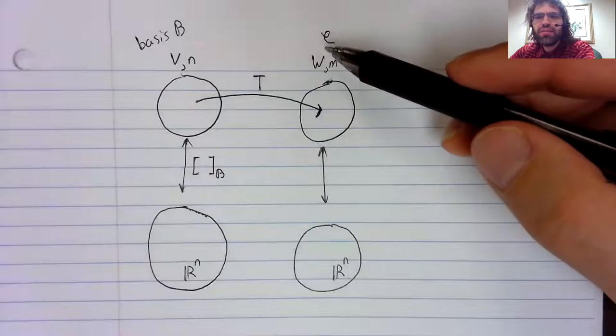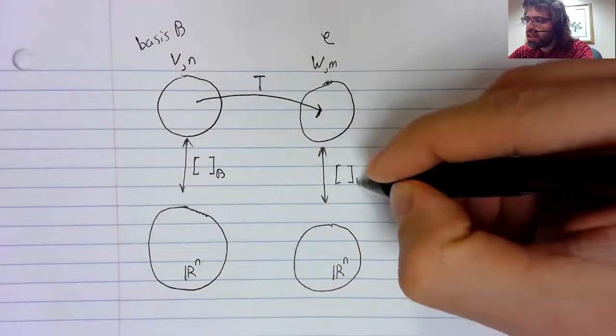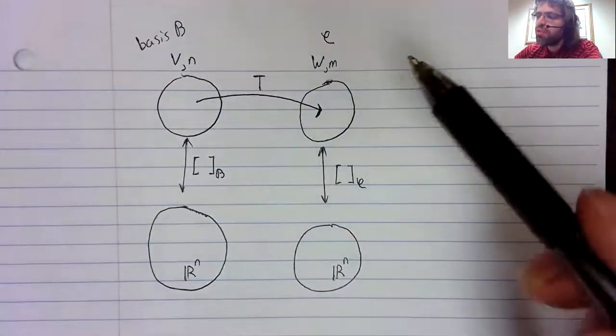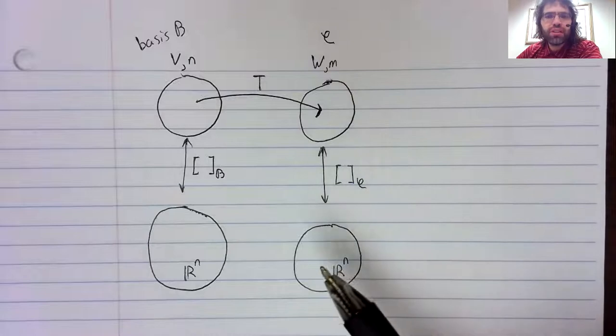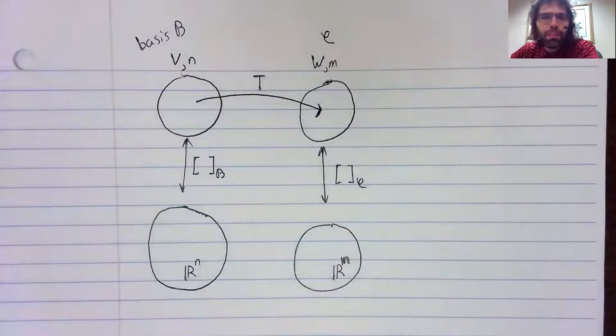If we have any basis of W, then the coordinate mapping is an isomorphism. So W is indistinguishable from R^m.